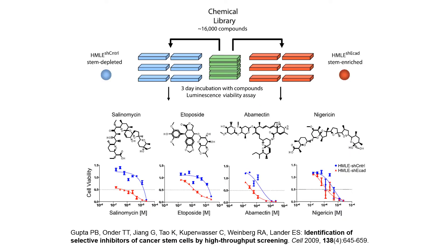In 2009, Eric Landers and Robert Weinberg's group at MIT conducted a high-throughput screening of more than 16,000 compounds using E-cadherin knockdown HMLE breast cancer cells, which had rapidly undergone EMT and exhibit a CD44-high and CD24-low marker profile, mimicking human mammary cancer stem cells. The study identified 32 compounds that exhibited selective toxicity toward breast mammary cancer stem cells. One compound, salinomycin, reduced the proportion of mammary cancer stem cells by 100-fold relative to paclitaxel, a commonly used breast cancer chemotherapeutic drug.